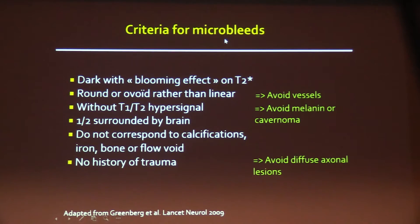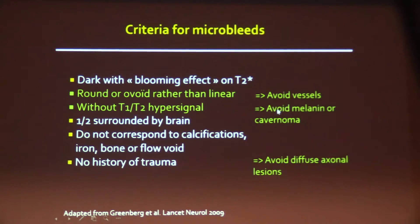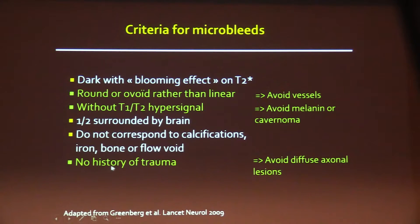The criteria for microbleeds are: dark with blooming effect on T2 star-weighted imaging; round or ovoid rather than linear to avoid vessels; no T1 or T2 hyperintensity, which helps exclude melanin or cavernoma; located within brain parenchyma to avoid vessels; not corresponding to calcification, iron, bone, or flow void; and no history of trauma to avoid diffuse axonal injury lesions.